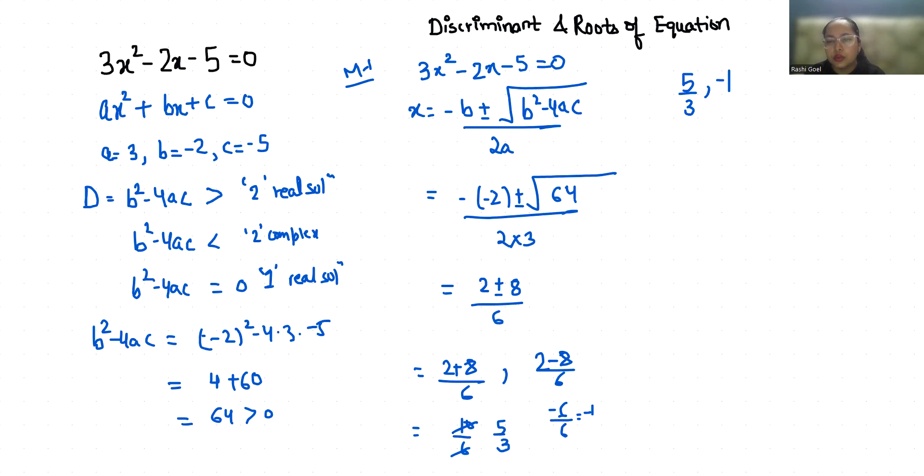Now method 2. 3x squared minus 2x minus 5 equals 0. We are going to do middle term split.